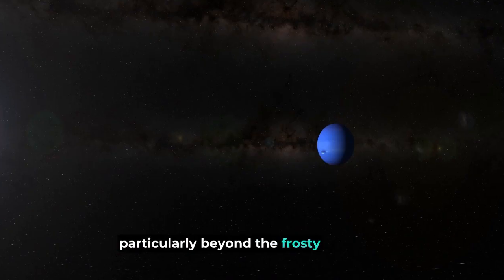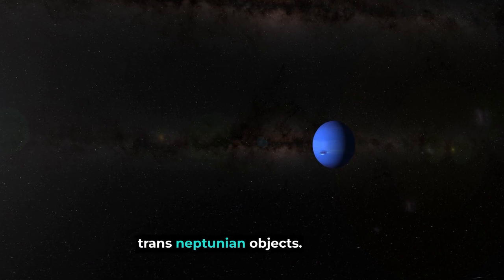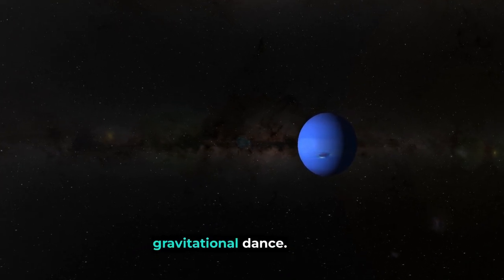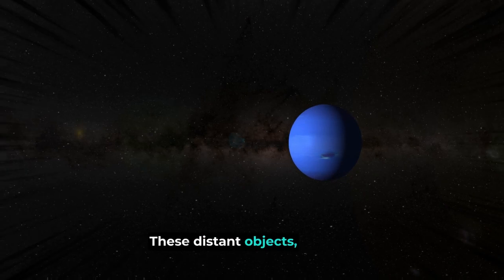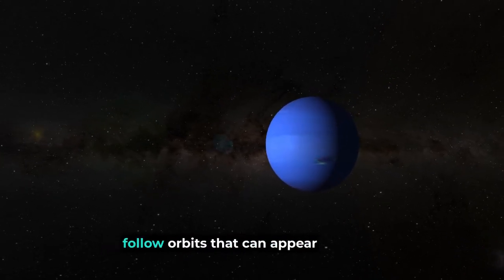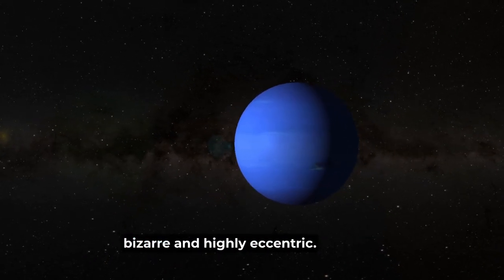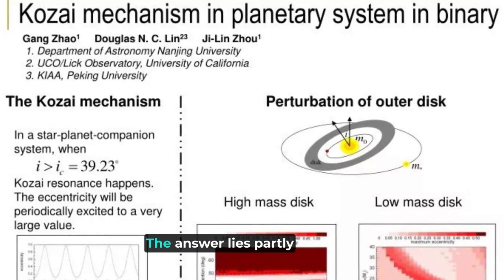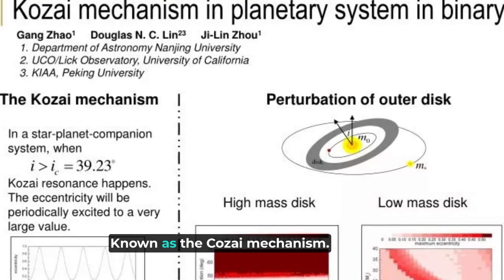In our solar system, particularly beyond the frosty realm of Neptune, trans-Neptunian objects, or TNOs, engage in a fascinating gravitational dance. These distant objects, often composed of ice and rock, follow orbits that can appear bizarre and highly eccentric. But why do these orbits behave in such an unusual manner?